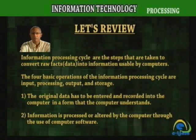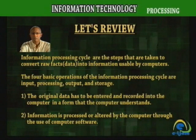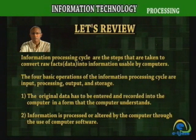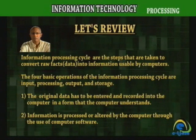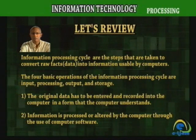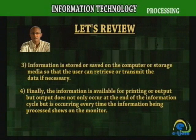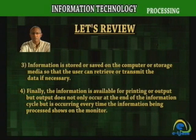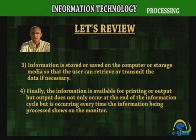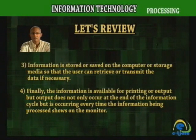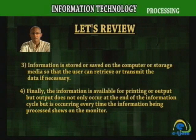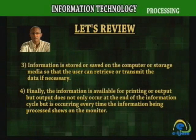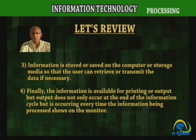The original data has to be entered and recorded into the computer in a form that the computer understands. Information is processed or altered by the computer through the use of computer software. Information is stored or saved on the computer or storage media so that the user can retrieve or transmit the data if necessary. Finally, the information is available for printing or output, but output does not only occur at the end of the information cycle — it occurs every time the information being processed shows on the monitor.